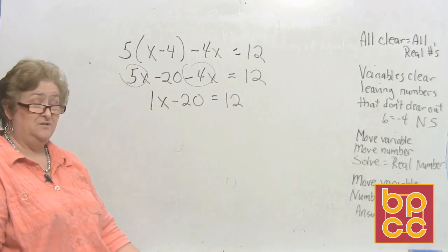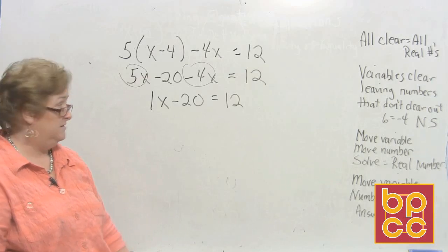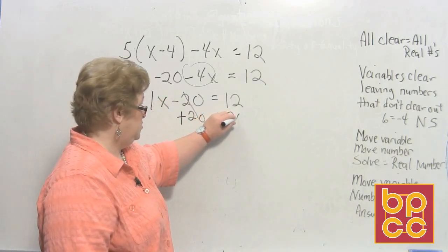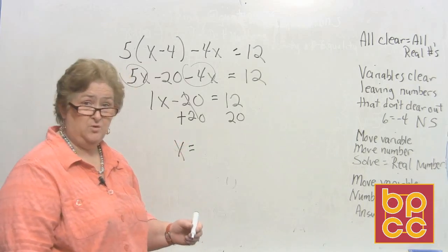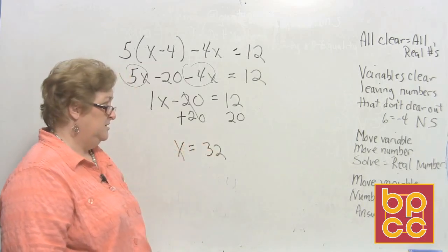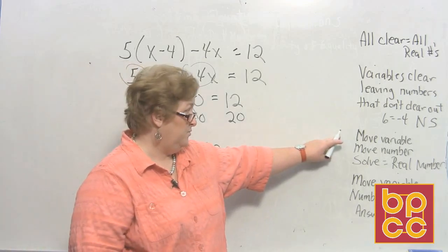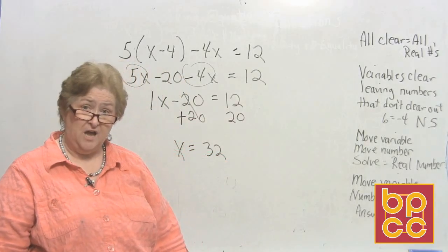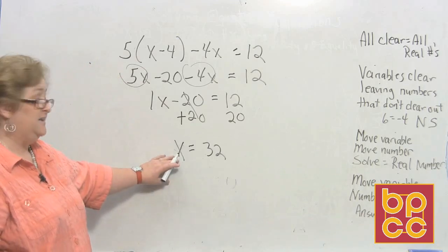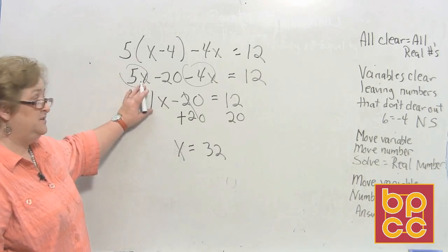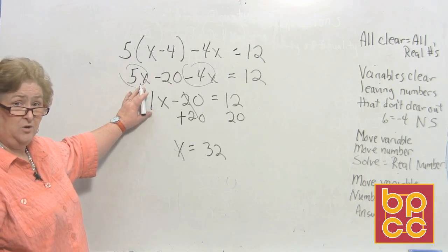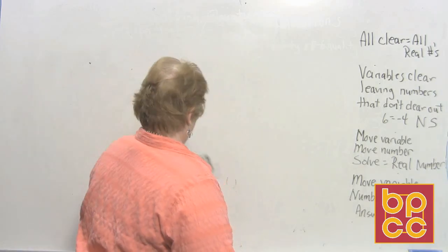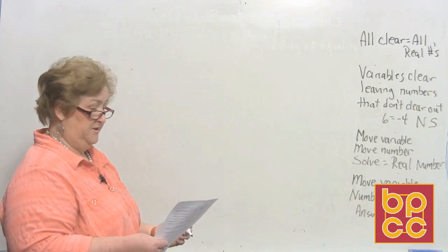We have 5 and negative 4, which makes 1x, so 1x − 20 = 12. Now we add 20 to both sides to clear it: x = 12 + 20 = 32. We combined our variables, moved the numbers to the other side, and solved. The only answer to this equation is x = 32.